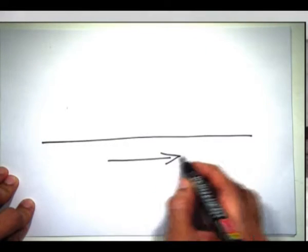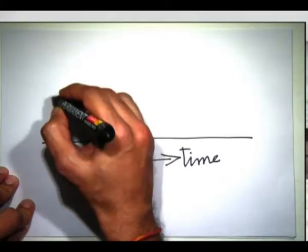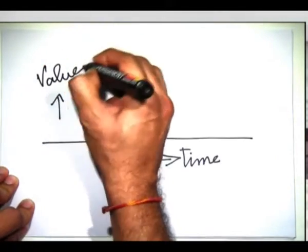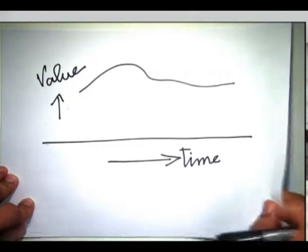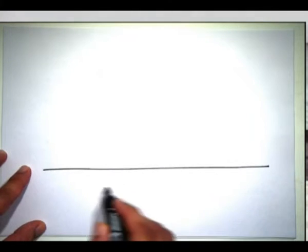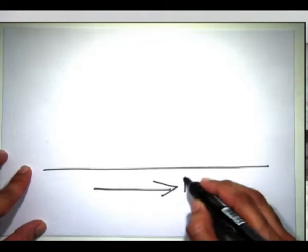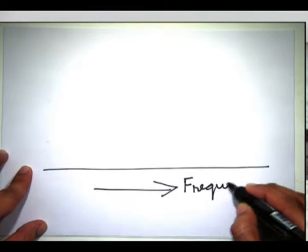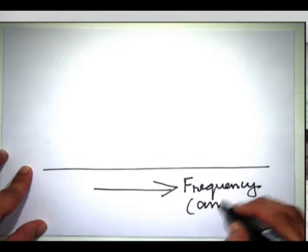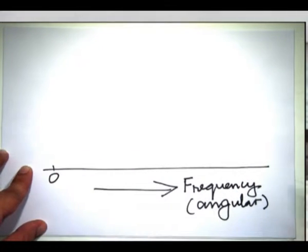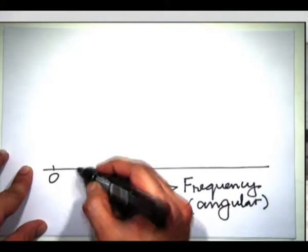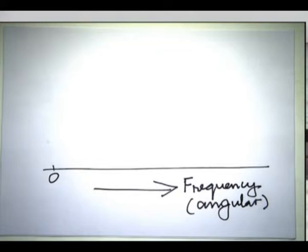One way to describe a signal is by time versus value — where value could be voltage, current, pressure, temperature, and so on. The other way is the frequency domain: you talk about the frequency of the sine wave, or the angular frequency for convenience, going from 0 towards infinity, and at every frequency you describe the signal's contribution.